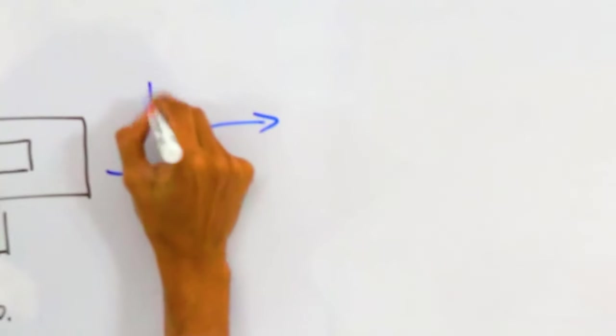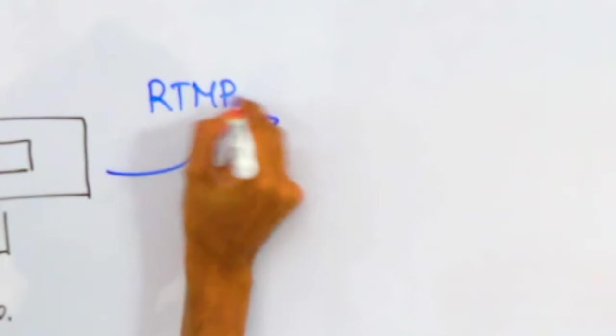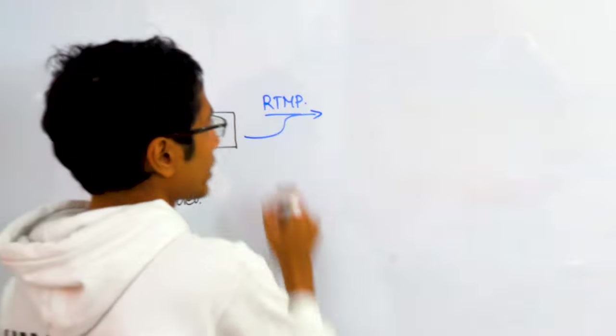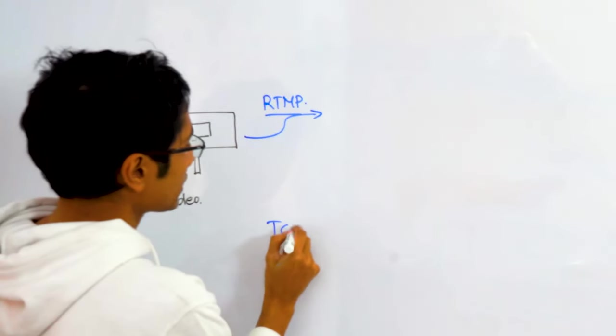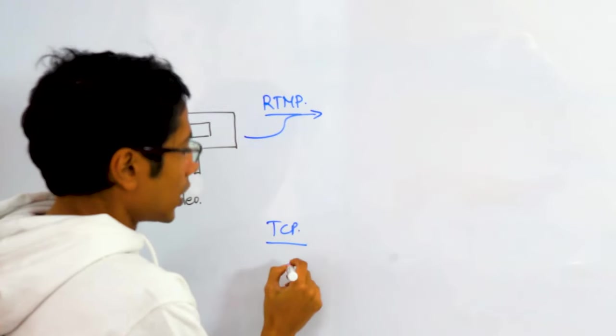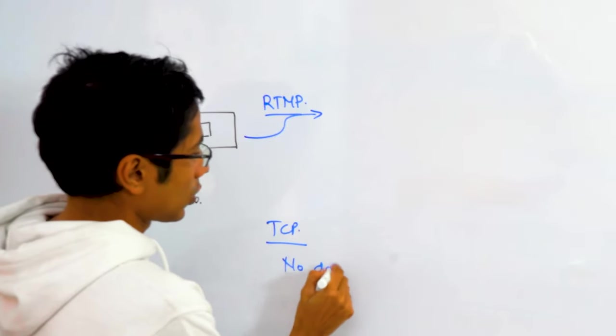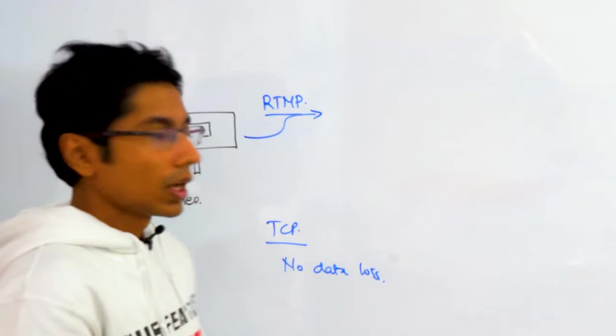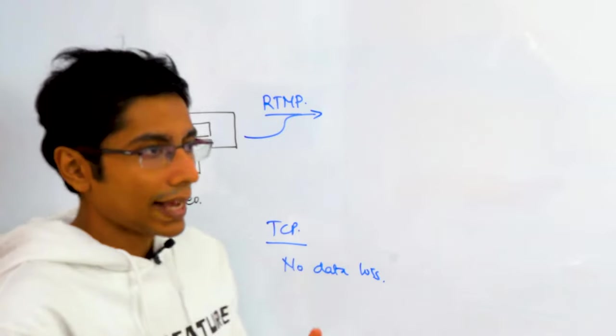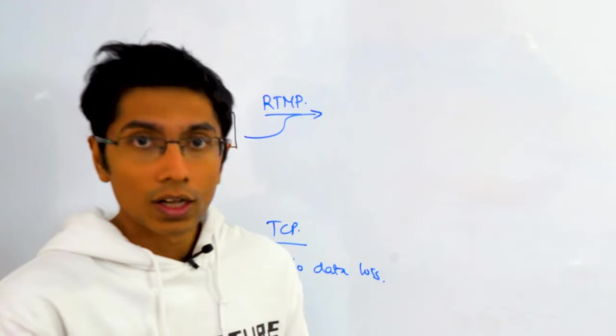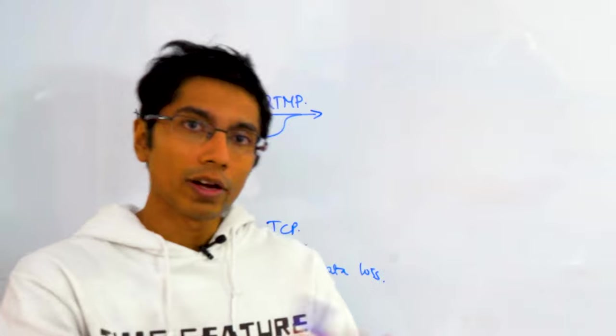So one very popular protocol which is used by various live streaming systems is RTMP. I'm using RTMP here because it is written over TCP. So there is no data loss when you are transporting video from here to here. As you can think of, TCP has acknowledgments, has ordering, has all the good stuff when you're looking for a reliable delivery.